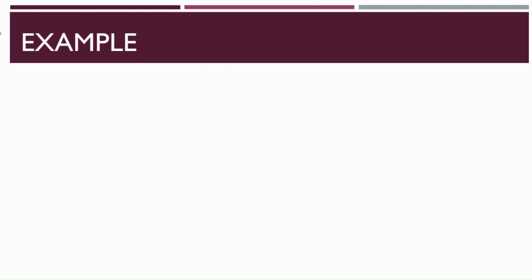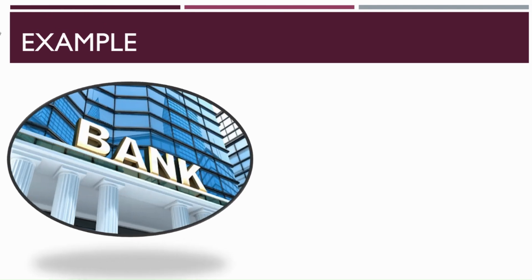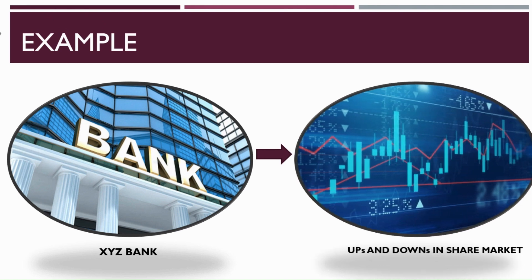To understand the concept of systematic risk, let's take an example of a share market. If XYZ Bank increased or decreased its repo rate or reverse repo rate and the whole share market got affected, we can say this is a case of systematic risk, as due to one circumstance the entire share market was affected.